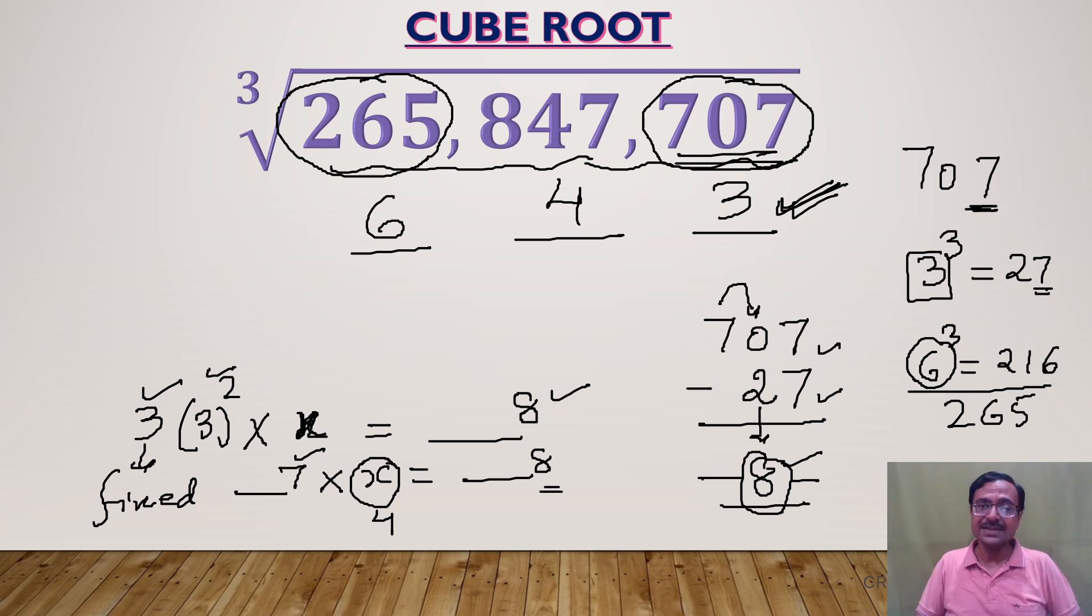Which forms the middle part of my answer. You can check using calculator: 643 cube is 265,847,707—that's the exact cube root which we were expecting. I know you must have understood around 60% of this. Let's make it 100% now.